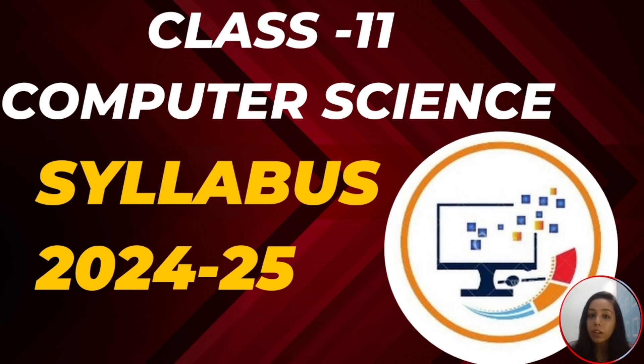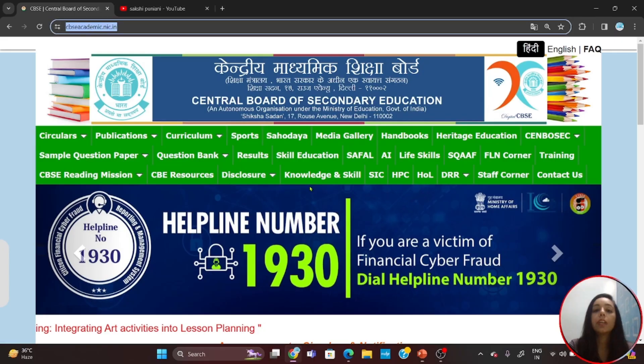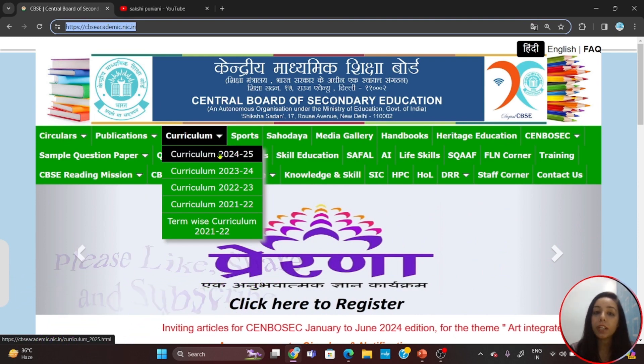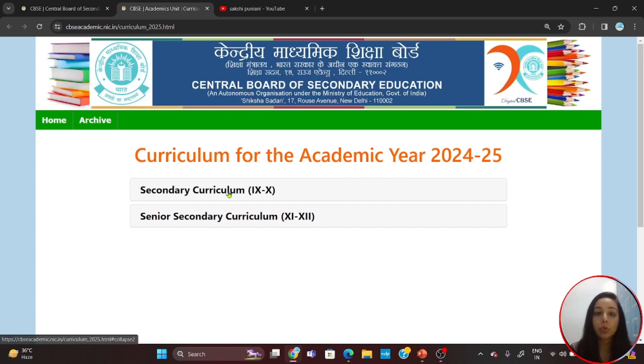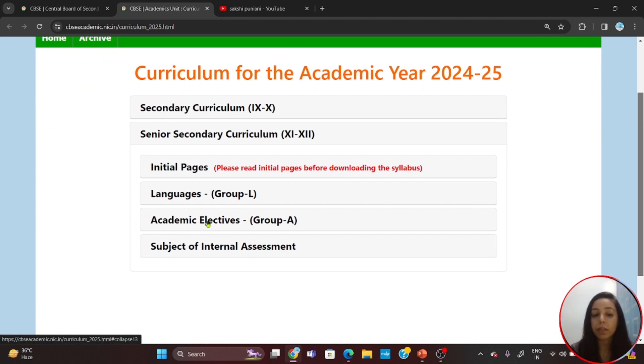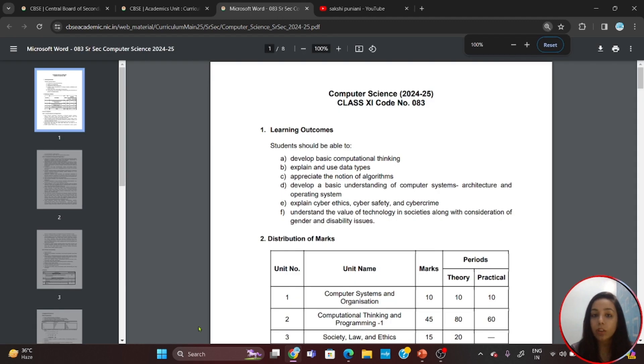Here we are going to see what is the syllabus, what are the different units, and what is the weightage of the marks. To download the syllabus, you will go to cbseacademic.nic.in. This website will give you the third link in the first line, which is the curriculum tab. You will click on the dropdown arrow and here you will see the option Curriculum 2024-25. Now just click on this. You will see two options: Secondary Curriculum for 9th and 10th, and Senior Secondary Curriculum for 11th and 12th class.